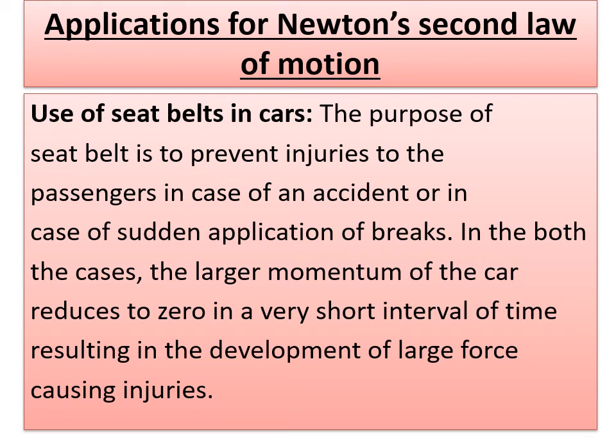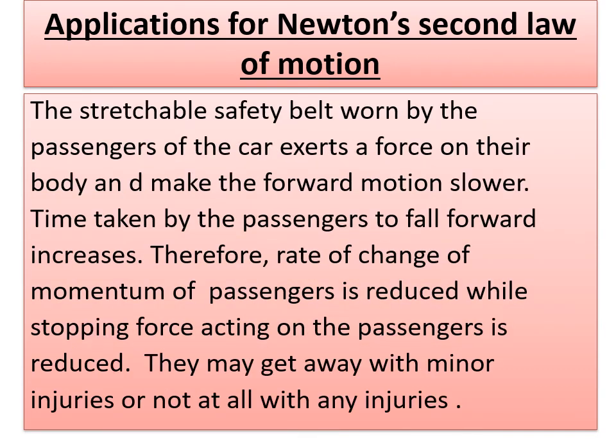In both the cases, the large momentum of the car reduces to zero in a very short interval of time, resulting in the development of large force which causes many injuries. What is the belt which is present in the car? The stretchable safety belt worn by the passengers of the car exerts a force on their body and makes the forward motion of the passengers slower. Time taken by the passengers to fall forward also increases. In this case, the rate of change of momentum of the passengers is reduced while the stopping force acting on the passengers is also reduced.